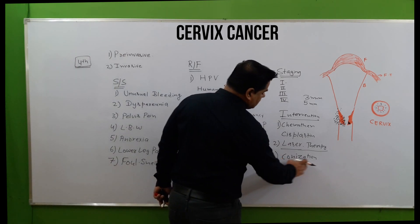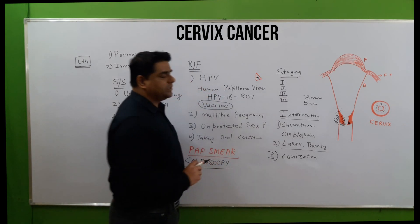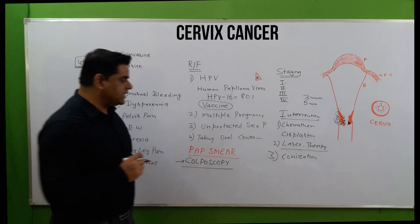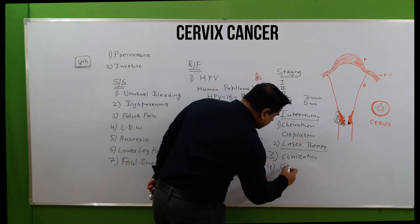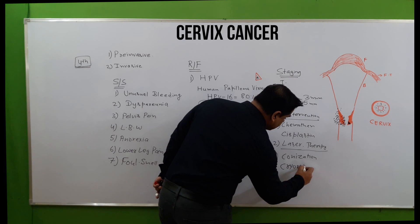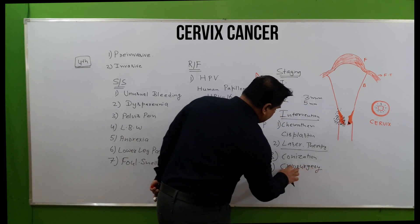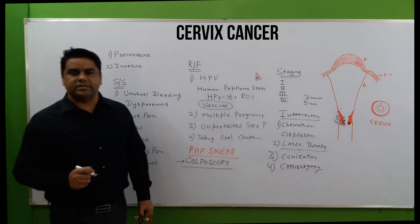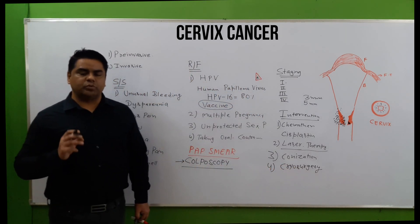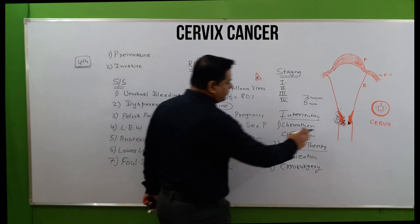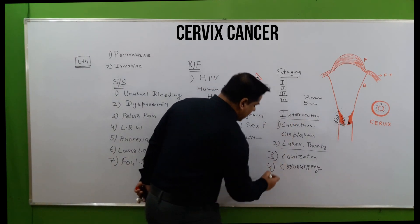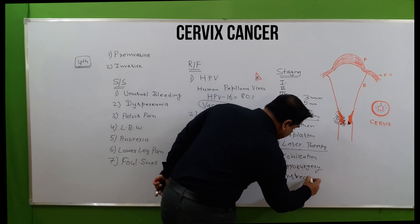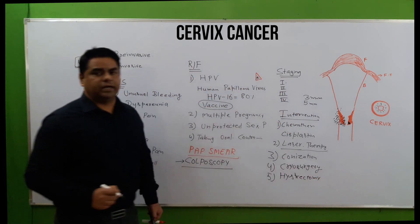Through conization, the reproductive health of the female is maintained. There is also the option of cryosurgery, which involves freezing the affected part using a super-cool liquid like liquid nitrogen. Hysterectomy — complete removal of the uterus — can also be done if the severity of the cancer is fourth grade and metastasis is severe; this is considered the last option.